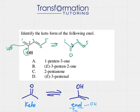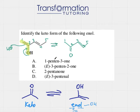Now that I've figured out my keto form, all you have to do is identify where your enol is, then convert the C–OH into C double bond O, and get rid of the double bond next to it. Now I just have to find the correct name. I see that my double bond O is in between two carbons, which means this is a ketone.